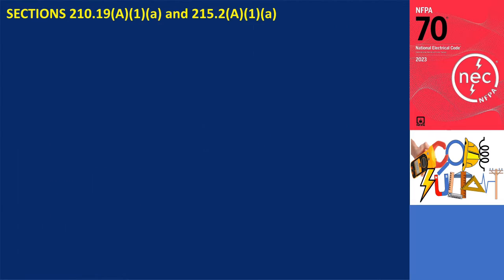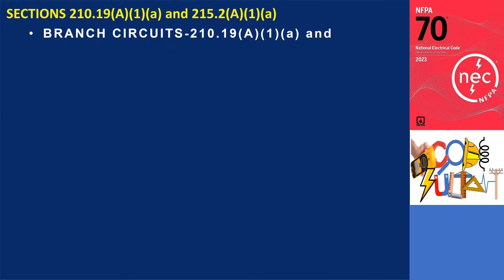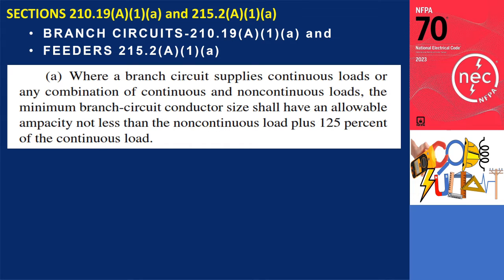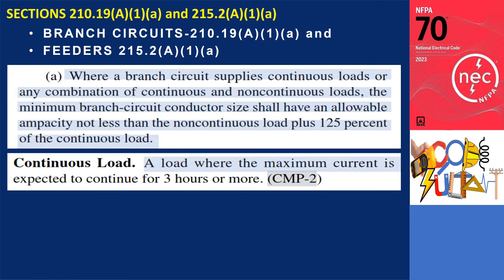Let's start with the basic rules for sizing branch circuits or feeder conductors. Sections 210.19A1A and 215.2A1A have the same language and state that where a branch circuit and feeder supply continuous loads or any combination of continuous and non-continuous loads, the minimum branch circuit or feeder conductor size shall have an ampacity not less than the non-continuous load plus 125% of the continuous load. The code defines a continuous load as one where the maximum current is expected to continue for 3 hours or more.